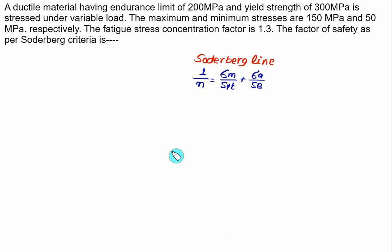According to the Soderberg criteria, 1 upon factor of safety is equal to mean stress divided by SYT, plus amplitude stress divided by endurance strength.